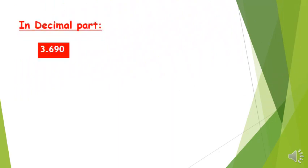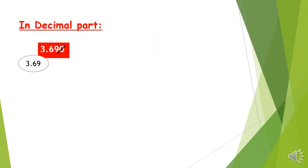In the decimal part, if the number ends with zero, those zeros are useless. For example, 3.690 — the decimal part ends with a zero. So this zero is useless and this number is equal to 3.69.